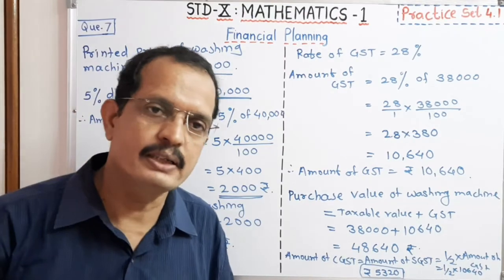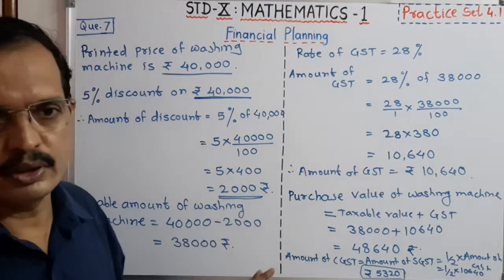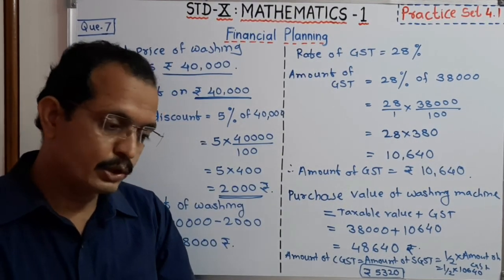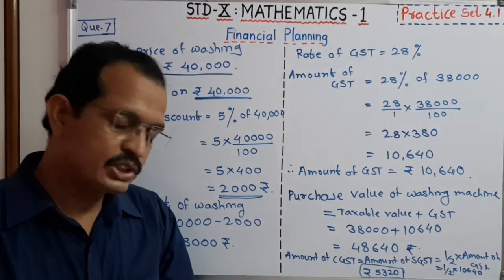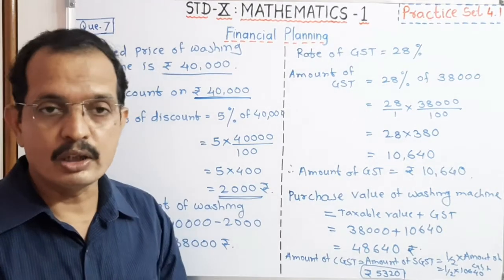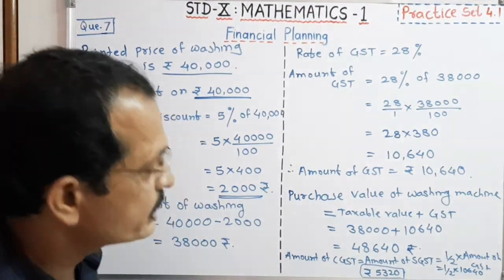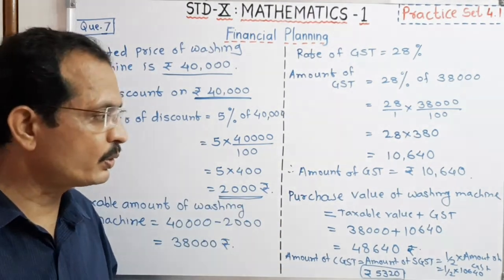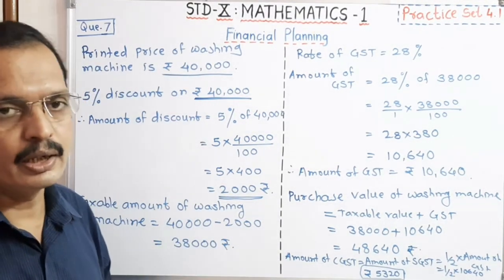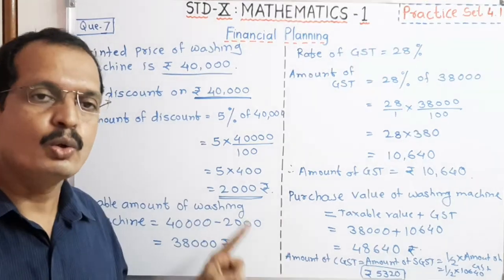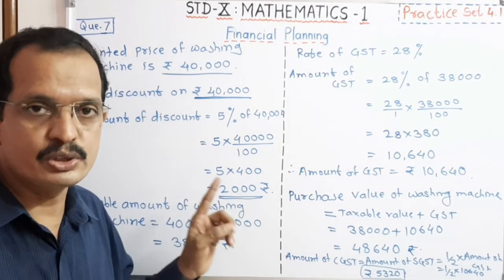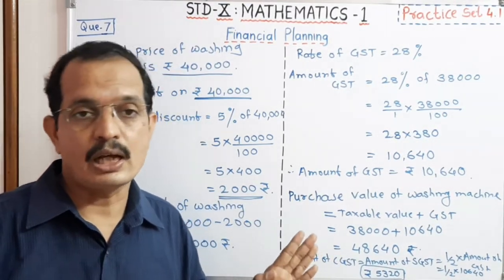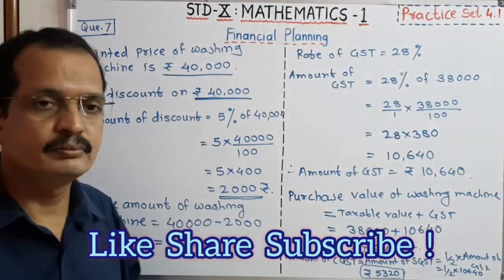Today we completed questions 5, 6, and 7 — all three are important. As you know, because of COVID-19, some parts are reduced from the chapter, so share markets and mutual funds parts are reduced. The GST part is important from this chapter. Write down all these sums in your notebook, go through them again and again, watch the video carefully, and solve the sums in the problem set.